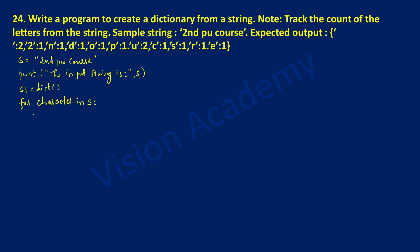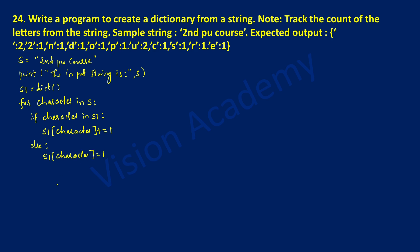Inside this for loop with indentation, I'm going to check the condition: if character in s1. If this condition is true, then s1 of character — that is the dictionary value for that character — must get incremented by one, so plus equals one. If this condition is false, the else part will get executed: s1 of character is set equal to the value one.